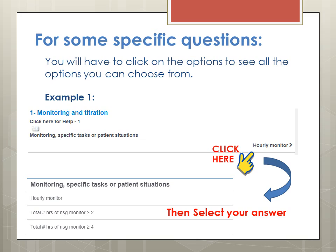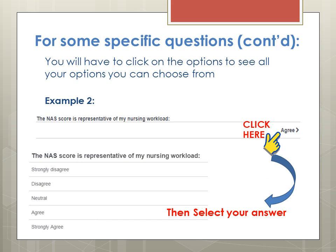For some of the questions, you will have to click on the options to see all the choices. For example, for question number one — Monitoring and Titration — you'll have to click on where it says Hourly Monitor, and then all three options will show. You then select your answer. Once you answer all 23 questions, the last question asks if the percentage represents your nursing workload. You click on the option Agree, where you will then see a list where you can select your answers.